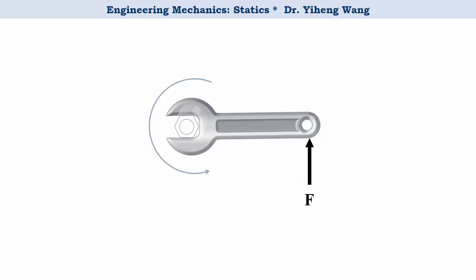We also know almost intuitively to apply the force at the edge of the handle, creating a maximum distance from the screw. And why is that? What would happen if we shorten that distance, say by half?